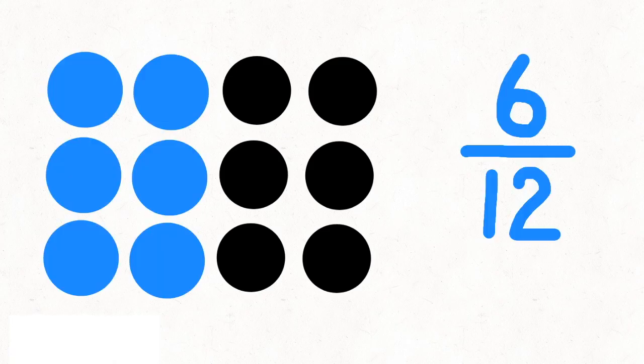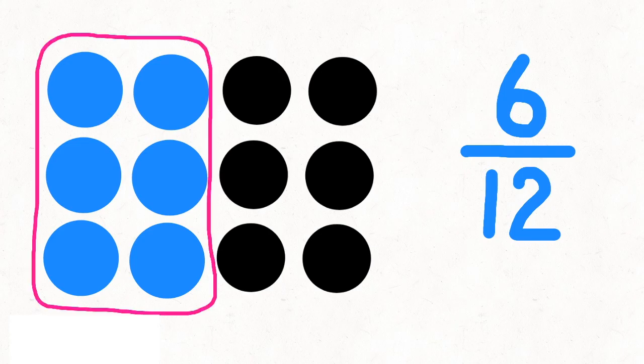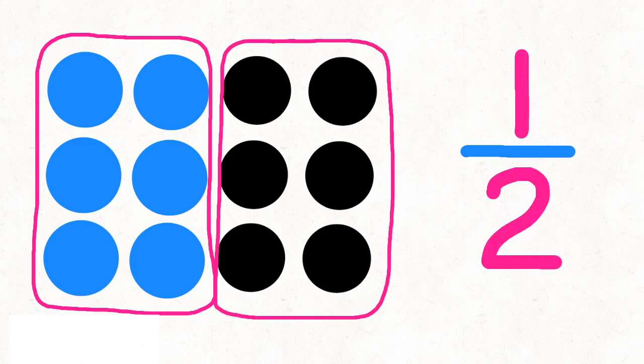For the next one, let's color 6 of the 12 dots blue. That means we've colored 6 twelfths of the dots blue. Since 6 goes into 12 two times, there are 2 groups of 6. I colored 1 out of the 2 groups blue, or 1 half. So 6 twelfths is equivalent to 1 half.